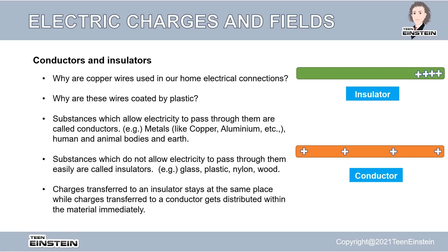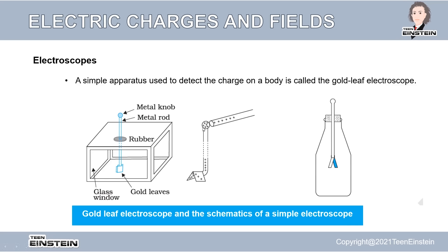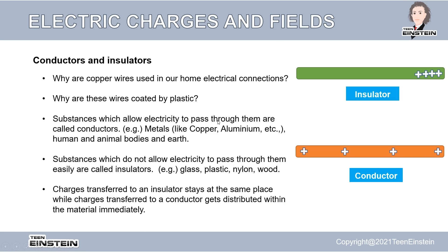In the electroscope we used metal knobs and metal rods. Why use metal and not rubber or wood? Because rubber and wood do not conduct electricity. When we put charges on the electroscope, we want the charges to travel down to the gold leaf, so we need a material where charges can move freely. Conductors are materials where charges can move freely — a very good example is copper wire, which is why we use it in home electrical connections.